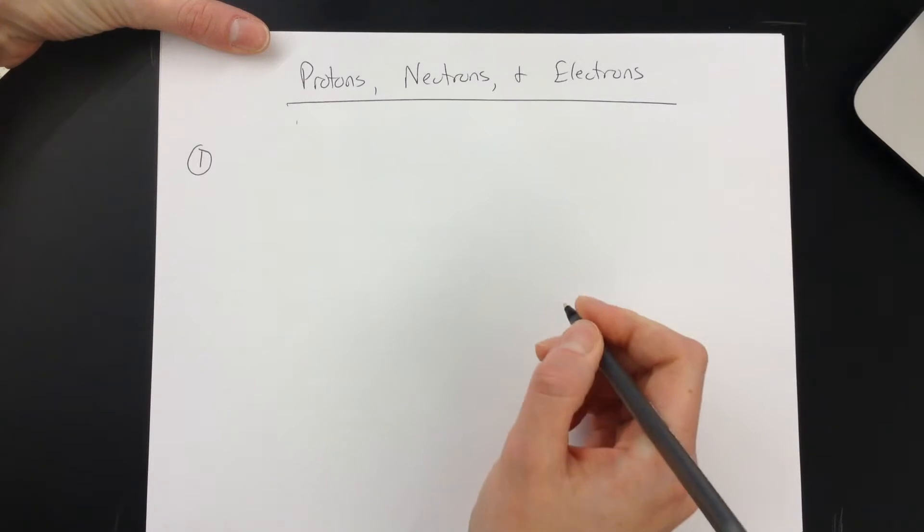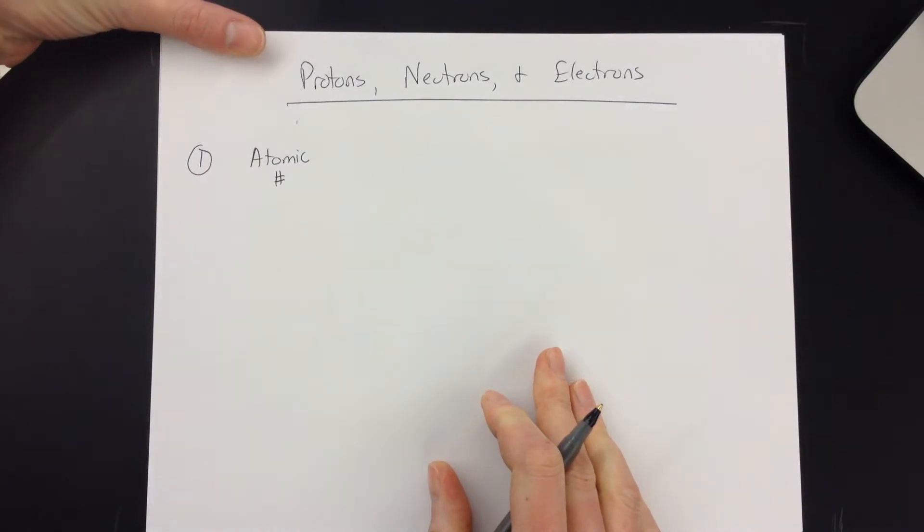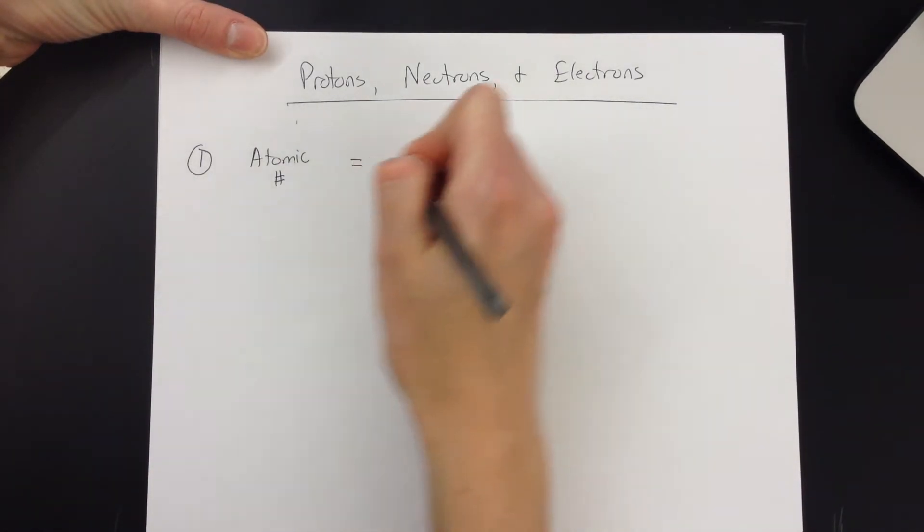So the first thing I always look for is the atomic number. Sometimes it's given, and sometimes it's not. And if I have it, then I know a couple of other things. I know that the atomic number is the number of protons.